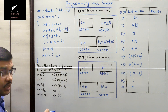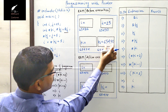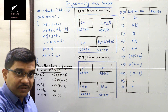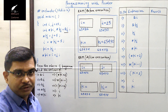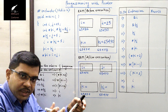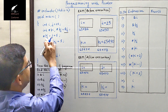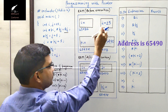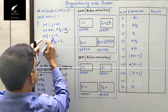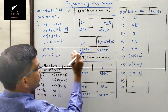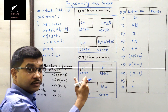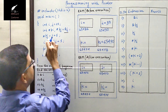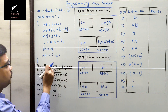In the third line we have asterisk pj. pj is a pointer with value 65490. Asterisk is the 'value at address' operator — whenever you put the asterisk symbol in front of an address it fetches the value present at that address. So asterisk pj means the value at 65490, which is j. We are assigning j plus 5 to this — 25 plus 5 equals 30. So after executing the third line, j becomes 30.